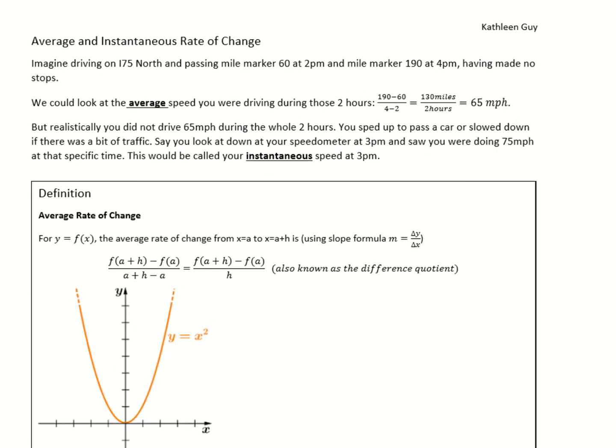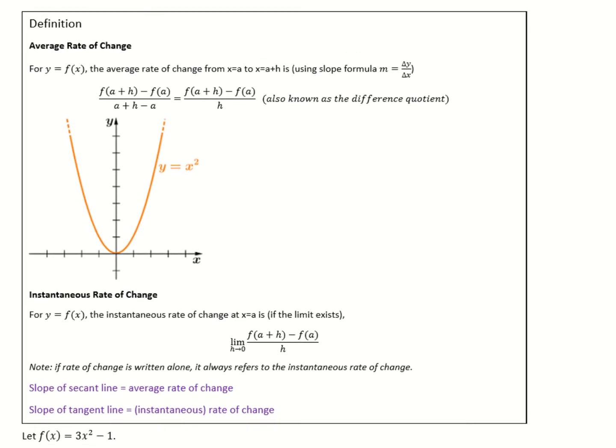Let's put this into a mathematical definition. For a function f(x), the average rate of change from one point x = a to another point a + h is found using the slope formula: the change in y over the change in x, giving us f(a+h) minus f(a) divided by a + h minus a. The a's cancel at the bottom, leaving h. This is called the difference quotient and it is the slope between those two points.